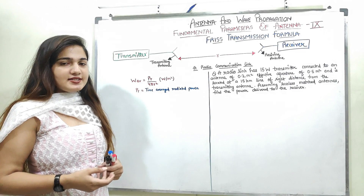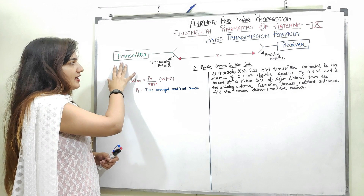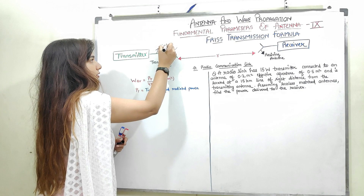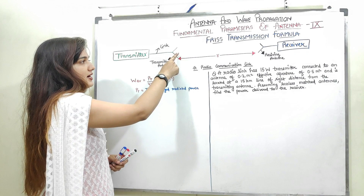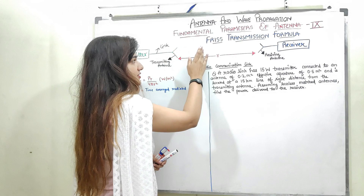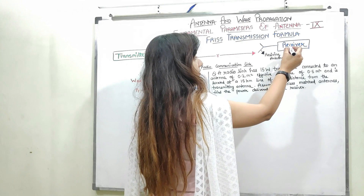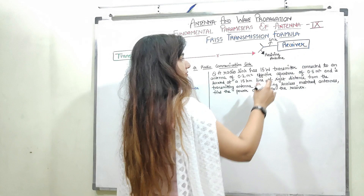As I said in my previous video, in a radio communication link, I have a transmitter and a link between the transmitter and the transmitting antenna. This line is called my link, and then I have the transmitting antenna. This transmitting antenna will produce transverse electromagnetic waves, which would move a distance R where the receiving antenna is present. The receiving antenna is joined with the receiver with the help of a receiving link, and then we have the receiver where I will get my signals.